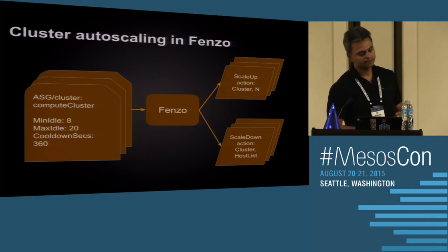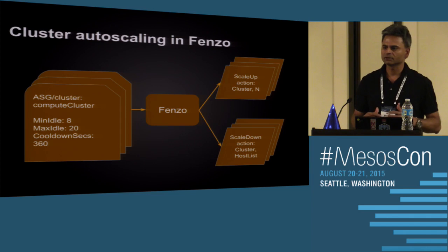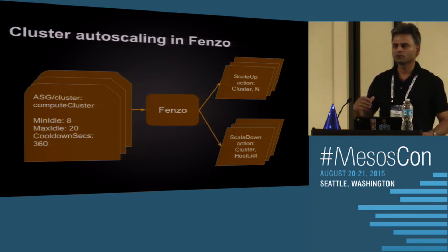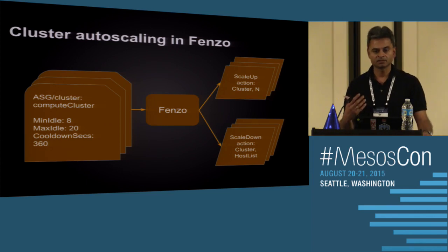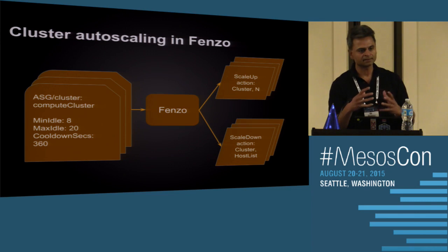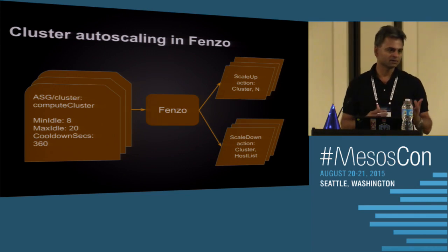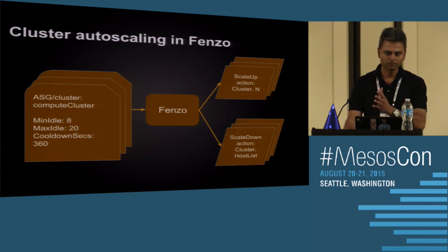For auto-scaling, FENZO has a concept of host groups — for example, hosts tuned for compute workloads versus memory or network-intensive workloads. For each group you can specify a minimum number of idle hosts, so new tasks don't wait for instances to spin up, and a maximum idle threshold to avoid wasted utilization. FENZO bin-packs tasks onto as few machines as possible, then provides a callback telling the framework exactly how many hosts to add or provides a list of hostnames to terminate.